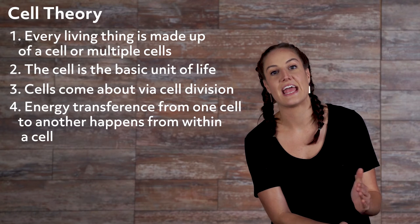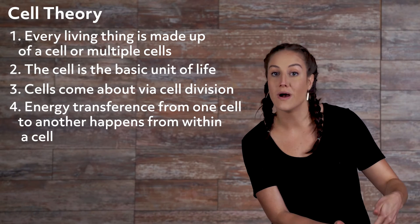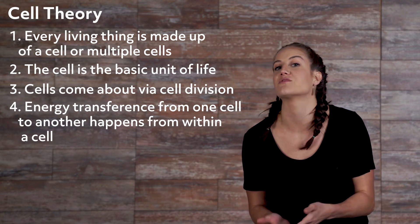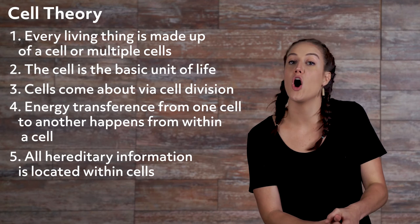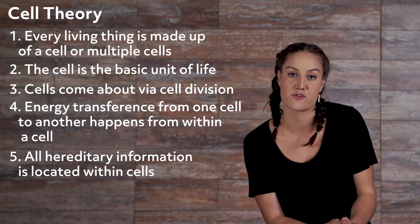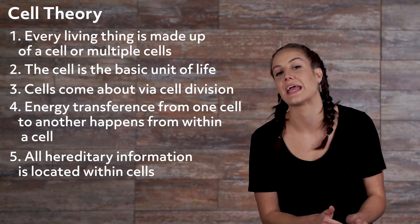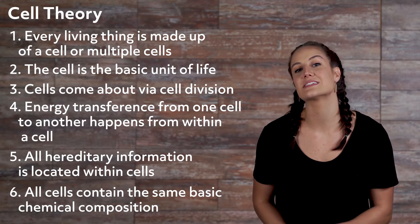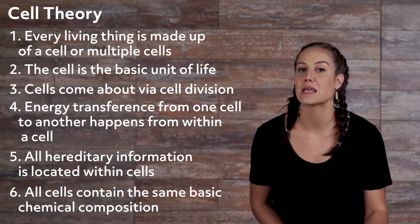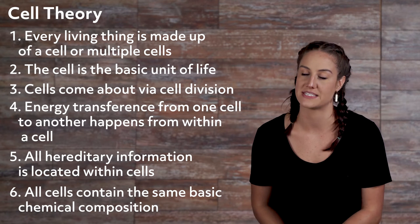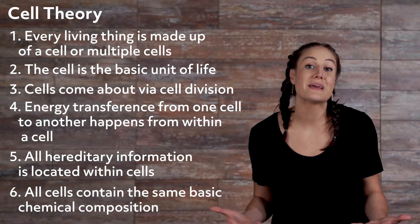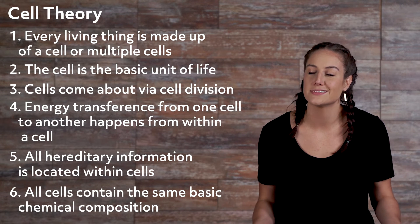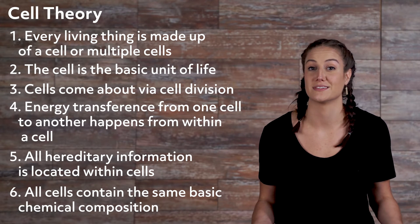4. Energy transference from one cell to another happens from within a cell. 5. All hereditary information is located within cells. 6. All cells contain the same basic chemical composition. So basically, what the cell theory tells us is that cells are pretty important.